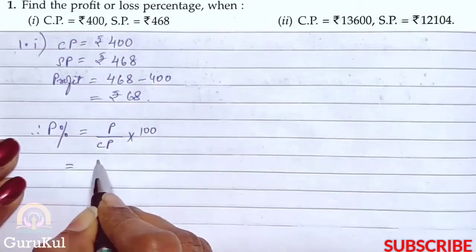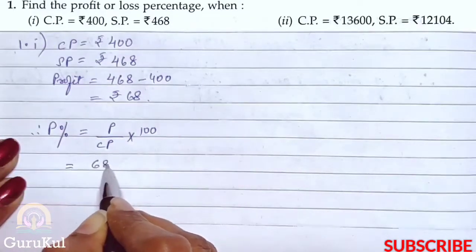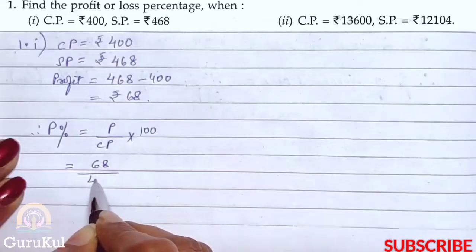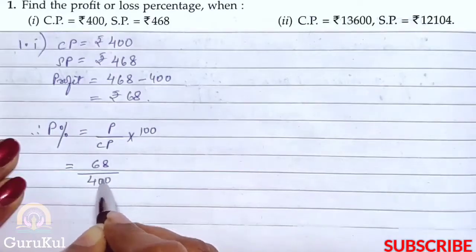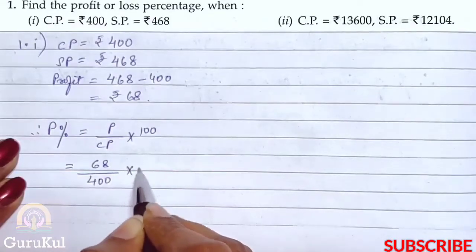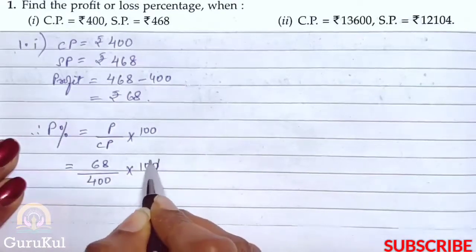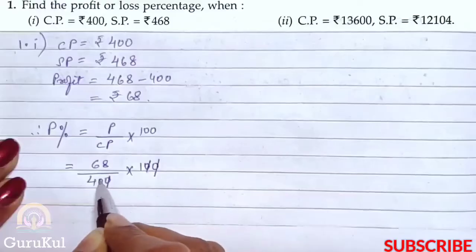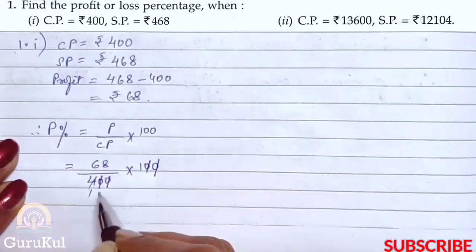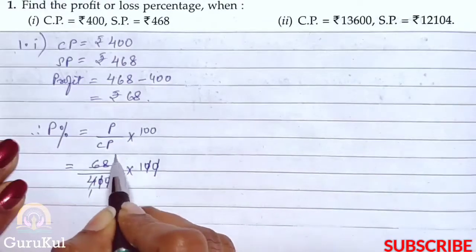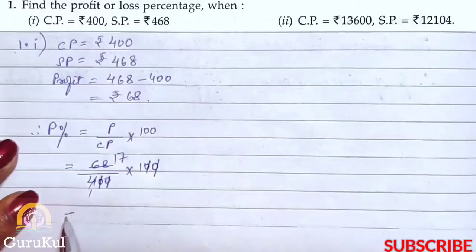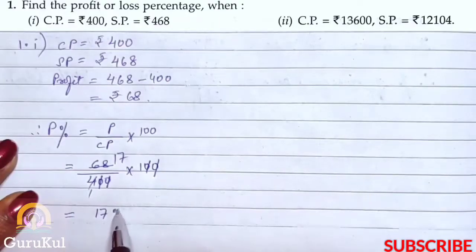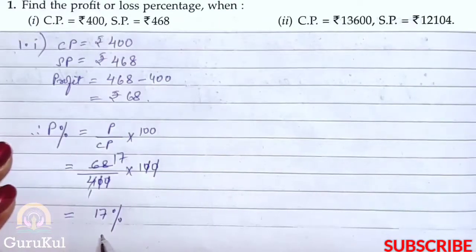Therefore, profit percentage = 68 divided by 400, into 100. So that gives us 17%. That is the profit percentage for Part 1 of question number 1.